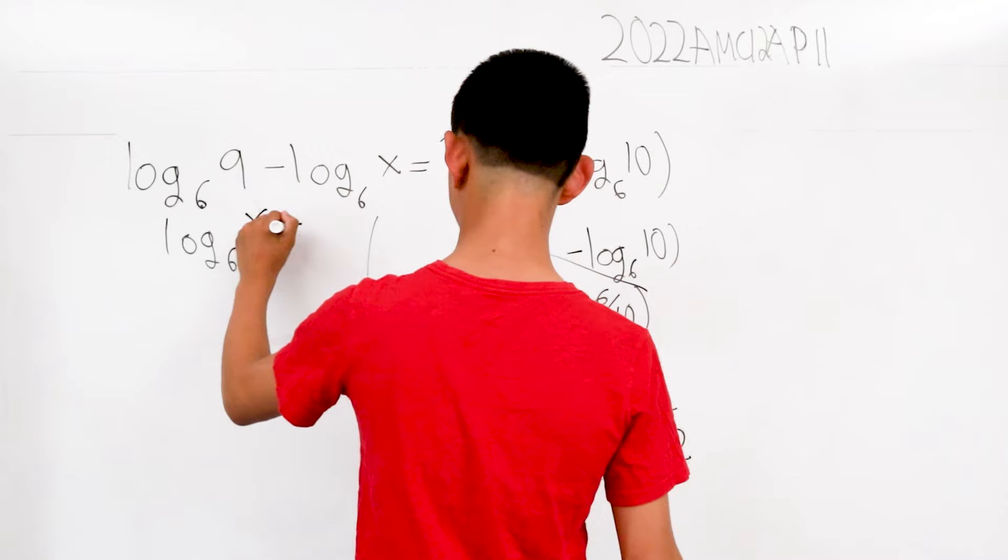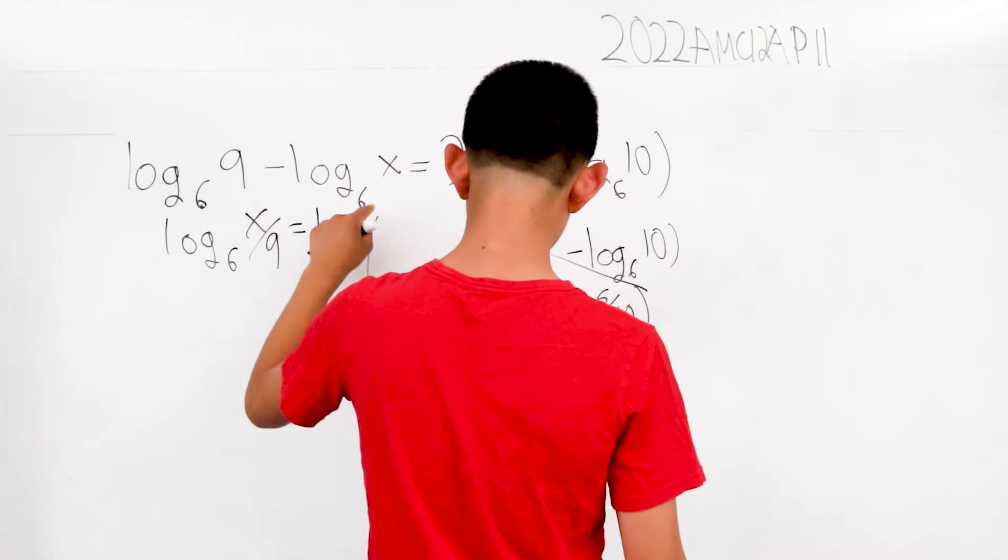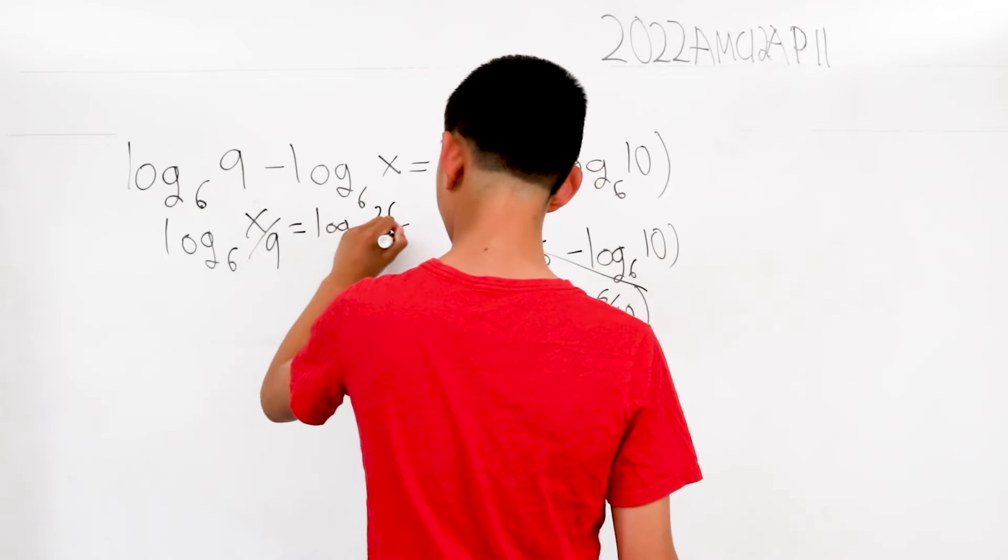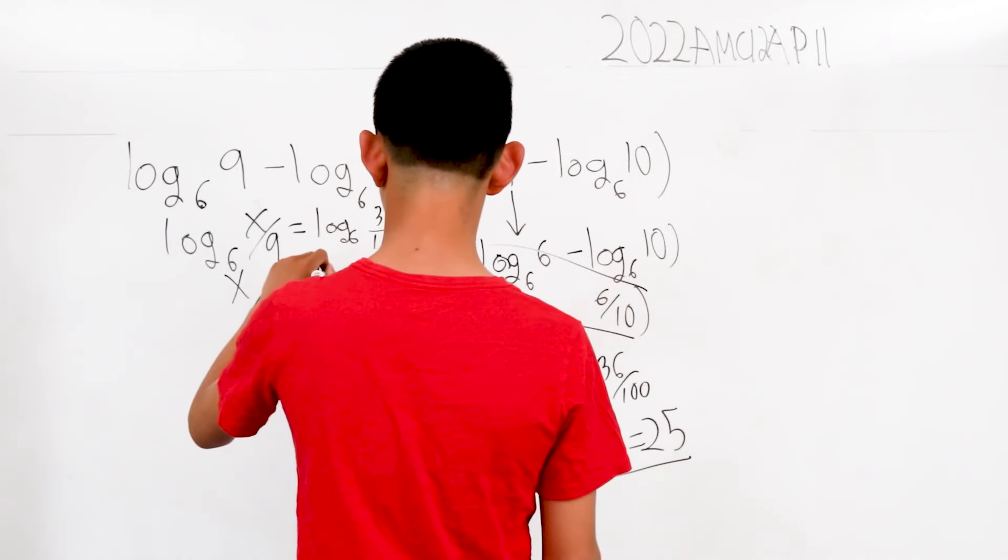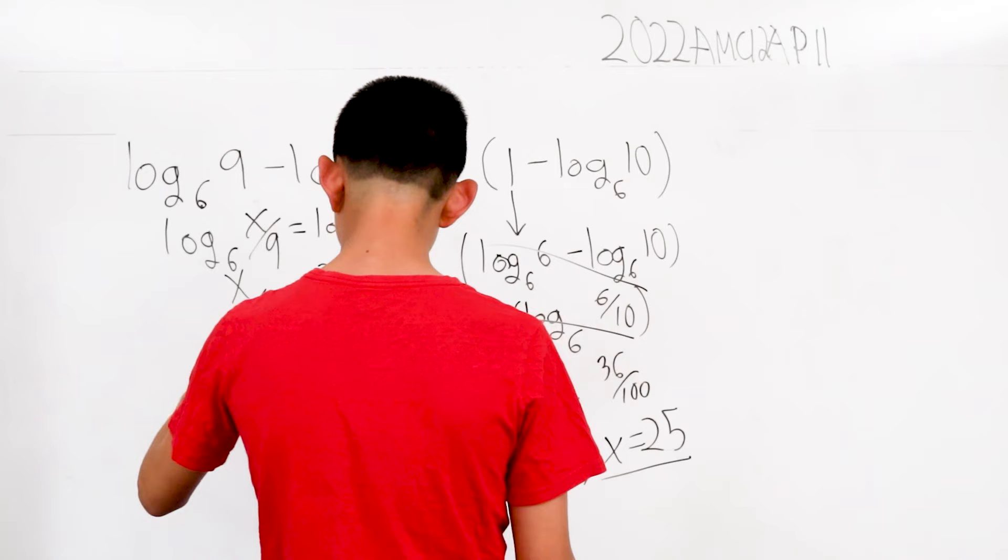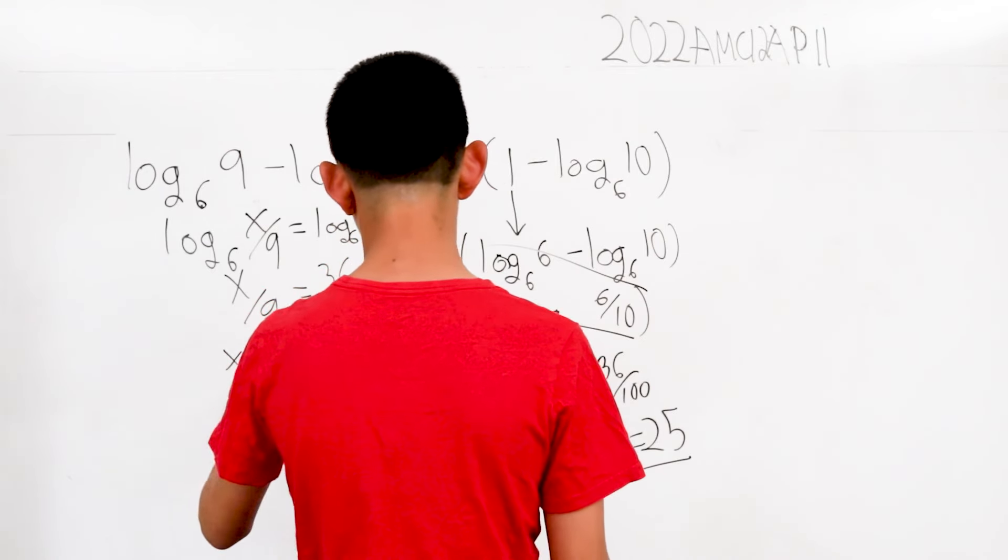And this is equal to log base 6 of 36 over 100. Same thing, x over 9 equals 36 over 100. Solving for x, we get that this is equal to 324 over 100.